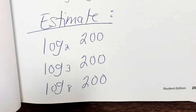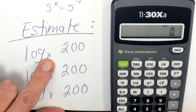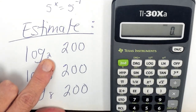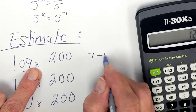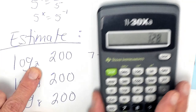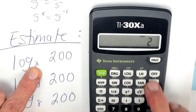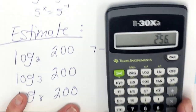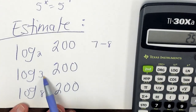Then on these three we estimated. You're going to have to play around. 2 to the 8th is 256 and 2 to the 7th is 128, so the answer is somewhere between 7 and 8. For log base 3, let's try some powers of 3.